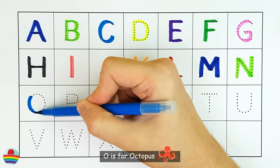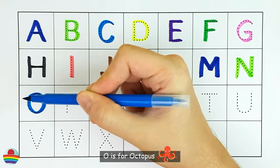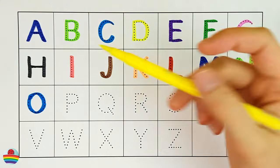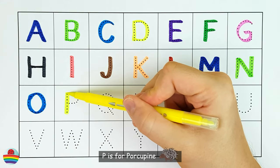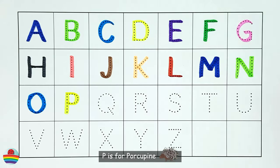O. O is for Octopus. O. P. P is for Porcupine. P.